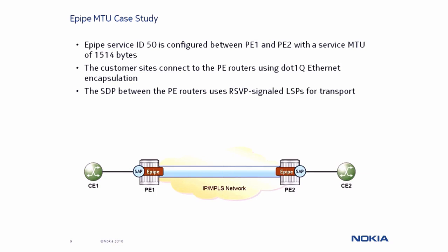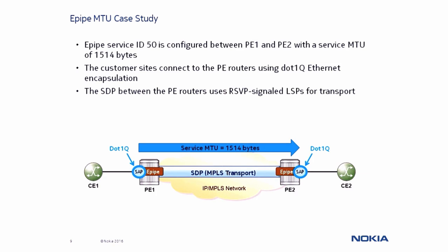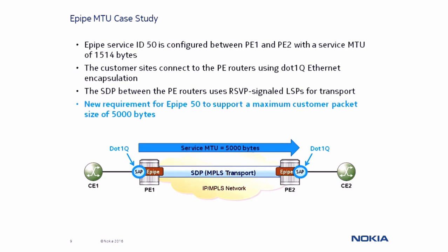Next, we will move to our lab environment to perform this ePipe MTU case study. An ePipe with a service ID of 50 is configured between PE1 and PE2, and currently supports a maximum customer packet of 1514 bytes. The customer devices CE1 and CE2 are connected to the PE nodes using .1Q encapsulation, and the SDP between the PE routers is using RSVP signaled LSPs. We are now required to configure ePipe 50 to support a maximum customer packet size of 5000 bytes.